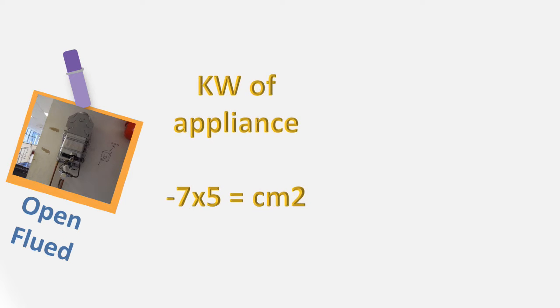So let's look at open flued appliances. You take the kilowatt rating of the appliance, you minus seven from the kilowatt, and whatever you've got remaining you times by five, and that will give you your ventilation requirement in centimeters squared.